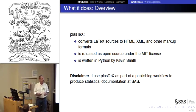So PlasTeX is, it converts LaTeX sources to HTML, XML, and other markup languages. It's released as open source under the MIT license, which is a very permissive license. And it's written in pure Python by Kevin Smith, who is also an employee at SAS. My contribution to this project is haranguing Kevin at lunch for about two years to get him to write this. I use it as part of a publishing workflow to create our statistical documentation at SAS.